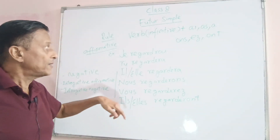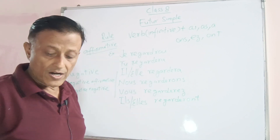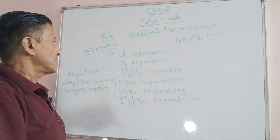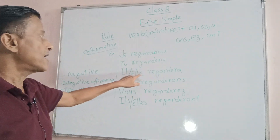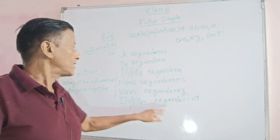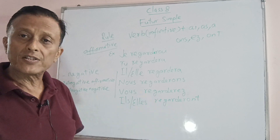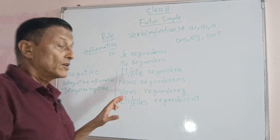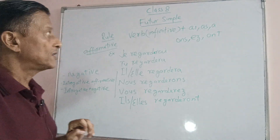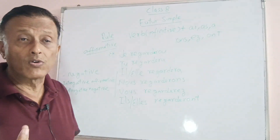For example, with the verb 'regarder' (to see/watch): Je regarderai (I will see), Tu regarderas (you will see), Il regardera (he will see), Elle regardera (she will see), Nous regarderons (we will see), Vous regarderez (you will see), Ils regarderont / Elles regarderont (they will see, masculine or feminine).